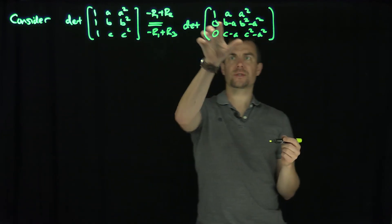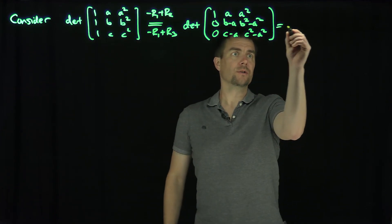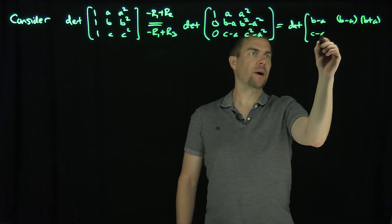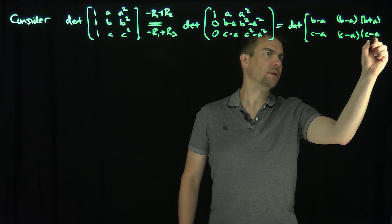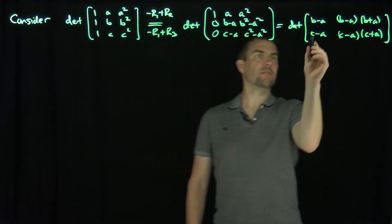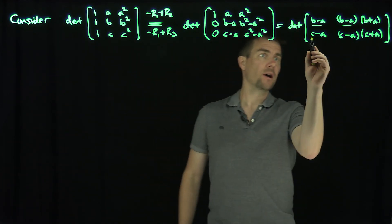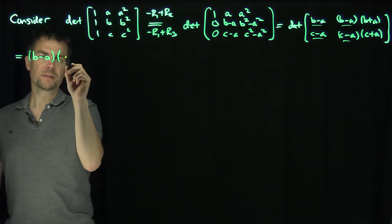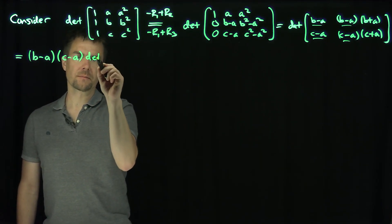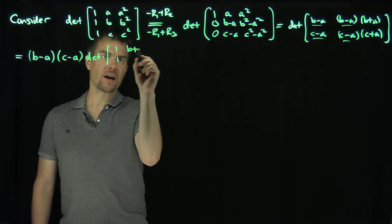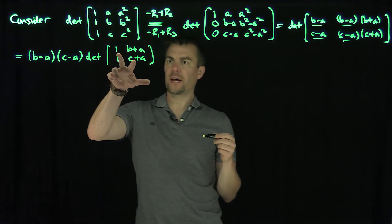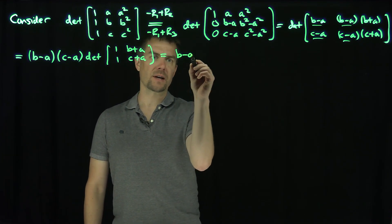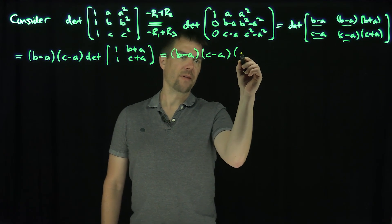Expanding along the first column, we get the 2x2 determinant with entries: b minus a, b² minus a²; and c minus a, c² minus a². Factoring, b² minus a² = (b minus a)(b plus a) and c² minus a² = (c minus a)(c plus a). Pulling out the common factors (b minus a) and (c minus a), we get (b minus a)(c minus a) times the determinant of 1, b plus a; 1, c plus a. That evaluates to (c plus a) minus (b plus a) = c minus b. So the result is (b minus a)(c minus a)(c minus b).